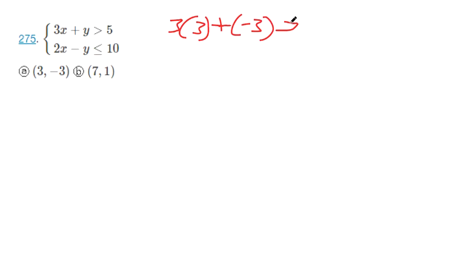I can simplify and see if it makes a true statement. 3 times 3 makes 9, and 9 plus negative 3 is going to make 6.